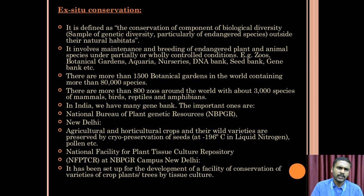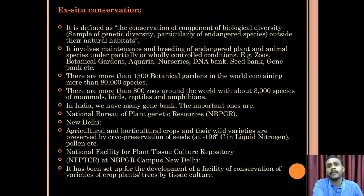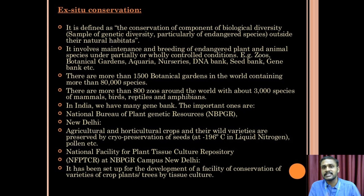Ex-situ conservation is defined as the conservation of components of biological diversity, particularly endangered species, outside of their natural habitats. It involves the maintenance and breeding of endangered plant and animal species under partially controlled or controlled conditions. Examples include zoos, botanical gardens, aquariums, nurseries, DNA banks, seed banks, and gene banks.